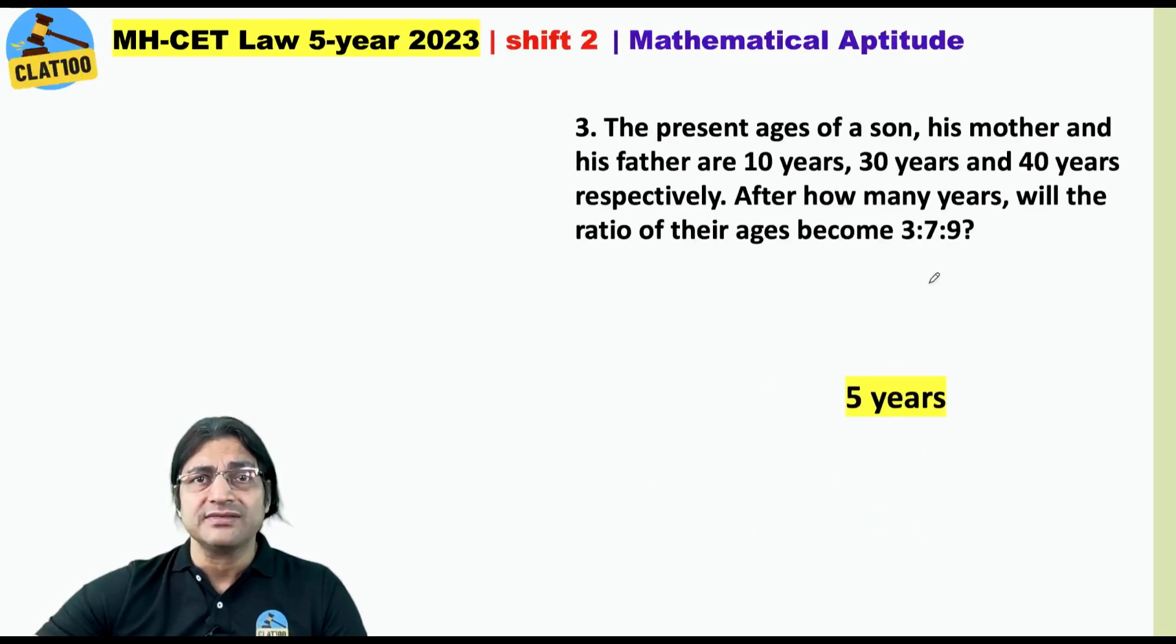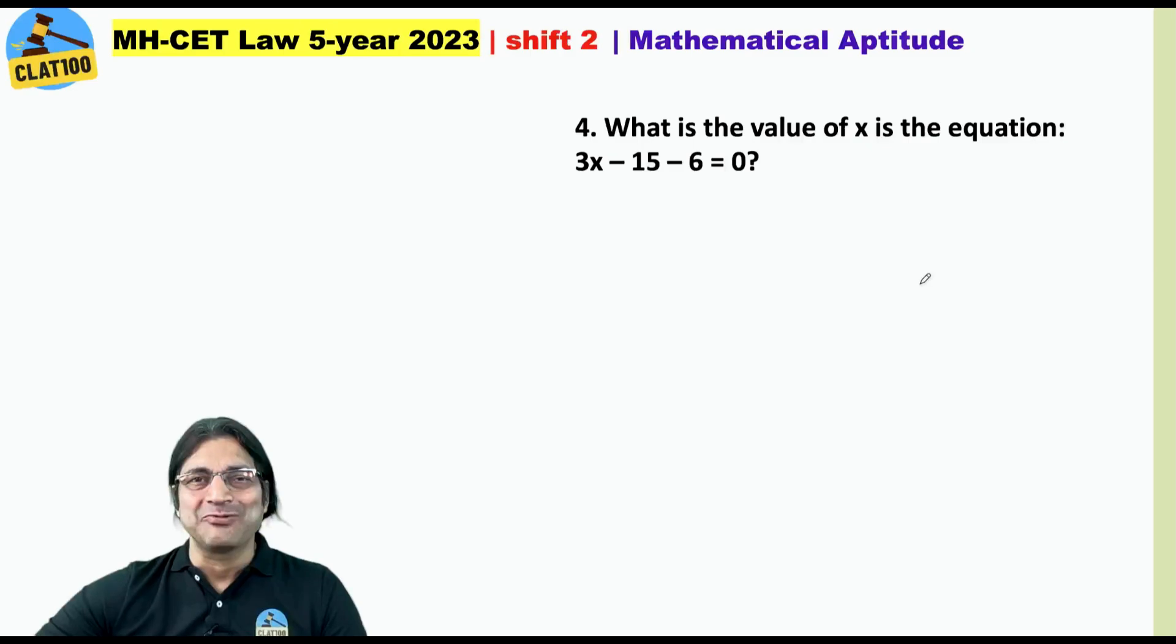What's the value of x in the equation 3x minus 15 minus 6 equals 0? This is 3x minus 21 equals 0, so x is 21 by 3, that is 7. It was a question or a joke.